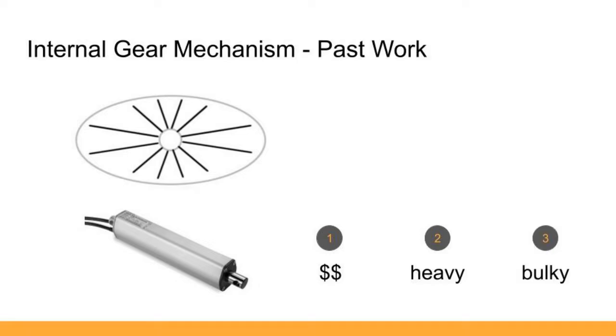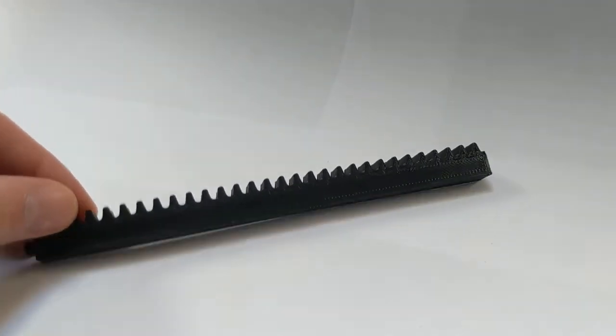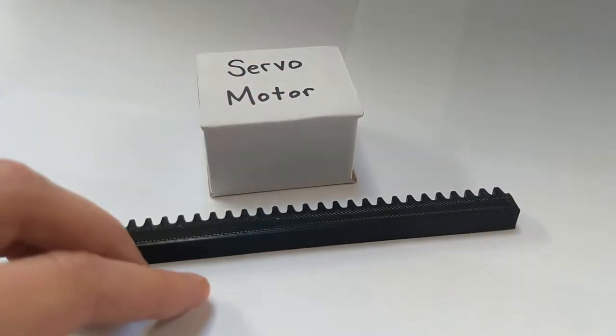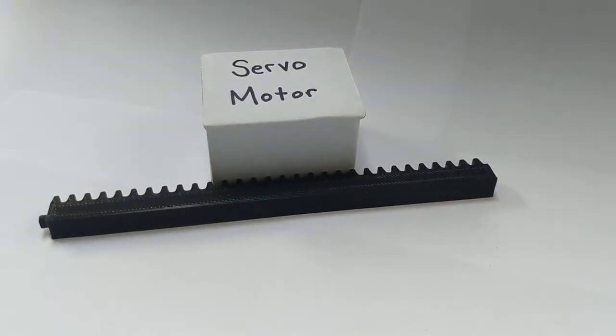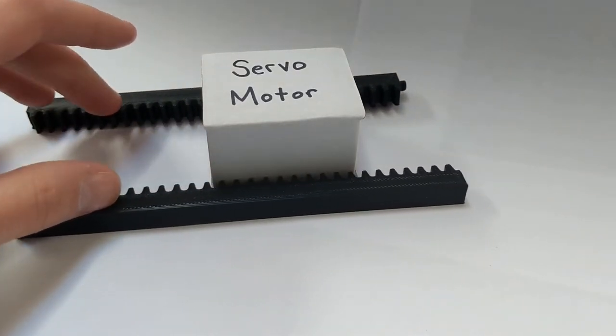So we began to brainstorm how we could take the same principles and apply them using less space and in a more cost-efficient manner. We ultimately decided to use rack gears to facilitate the radial movement. We first thought to use one servomotor per rack gear, but decided that this poses the same problems as the linear actuators. The problem was then trying to create a gear train, which could use one motor to power more than one rack gear.